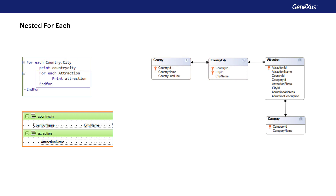Secondly, the base table of the nested foreach command is determined. The attraction base transaction is considered, as well as the attraction name attribute included in the print block. If a base transaction hadn't been written, something related to the external foreach command attributes would be considered to determine the base table of the internal foreach command, but this is not the case.